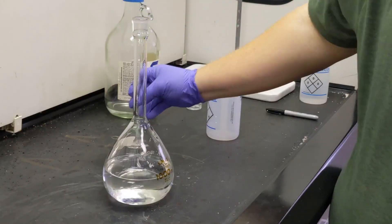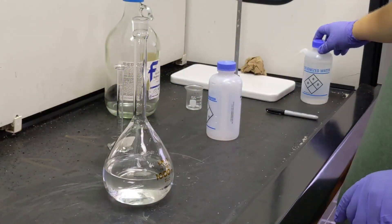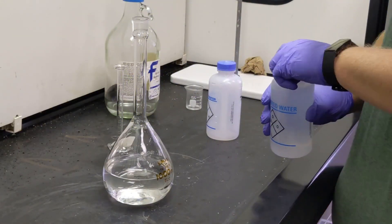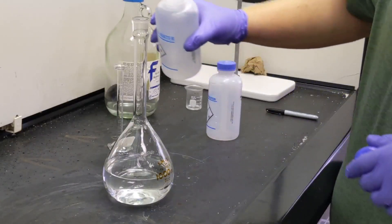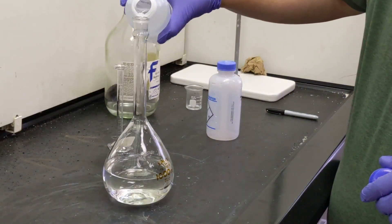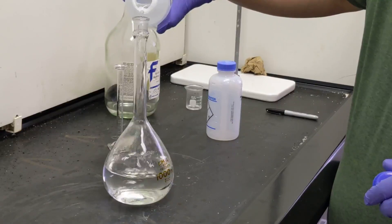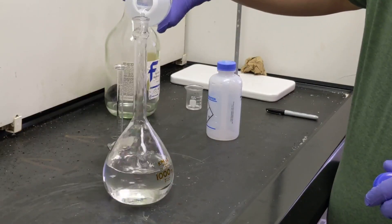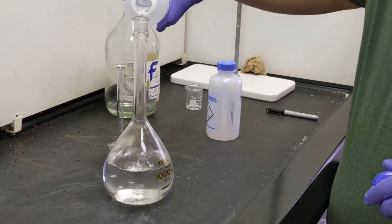Now the only thing left is to dilute our acid to the correct volume by adding water until it reaches the mark on the volumetric glassware. When we have a lot of water to add, it's helpful to unscrew the cap and pour it in. As the flask fills, we'll approach the mark relatively quickly.